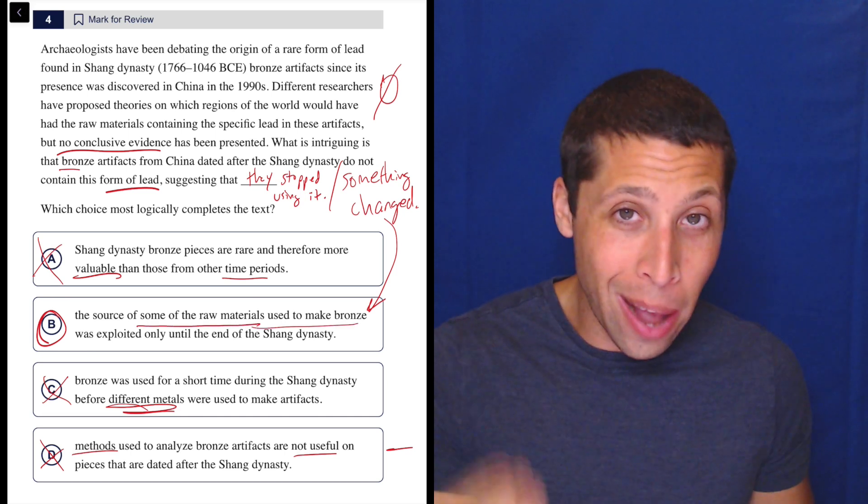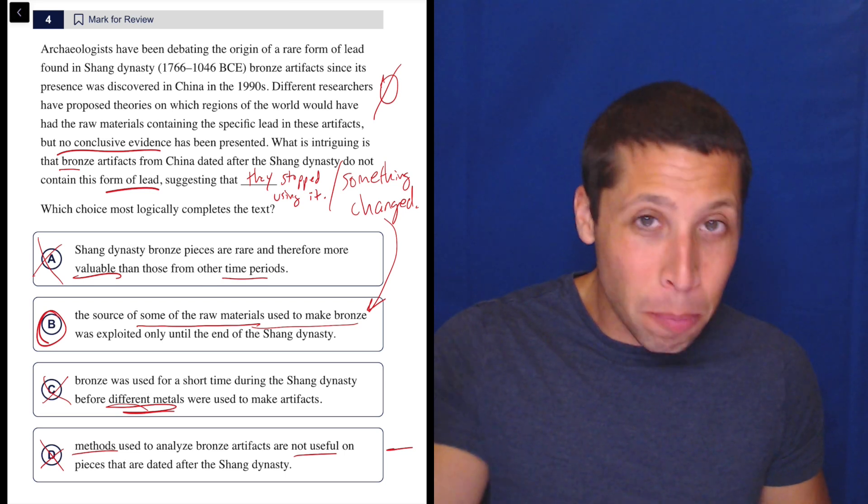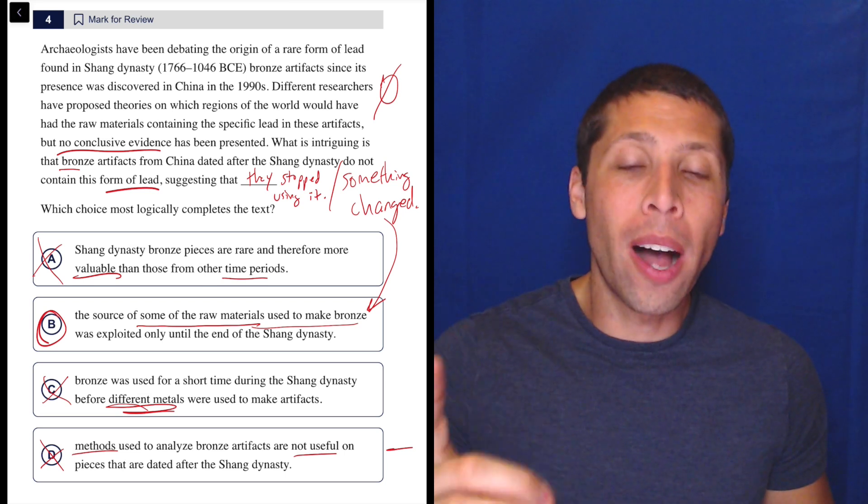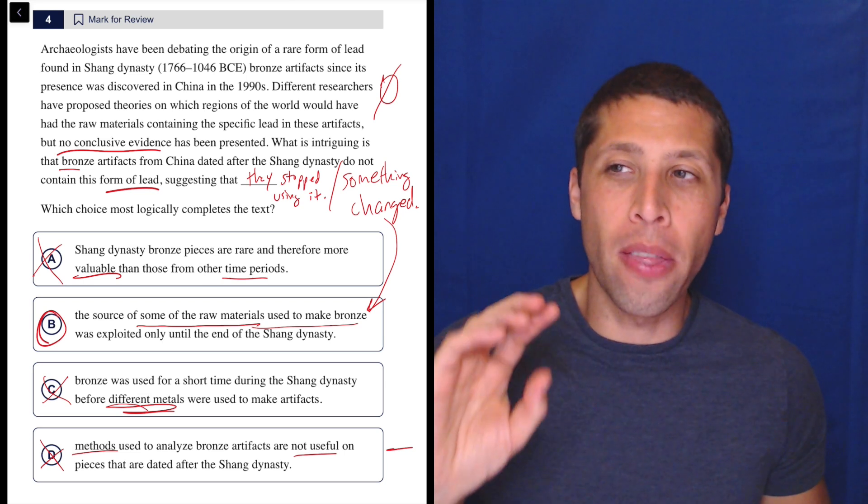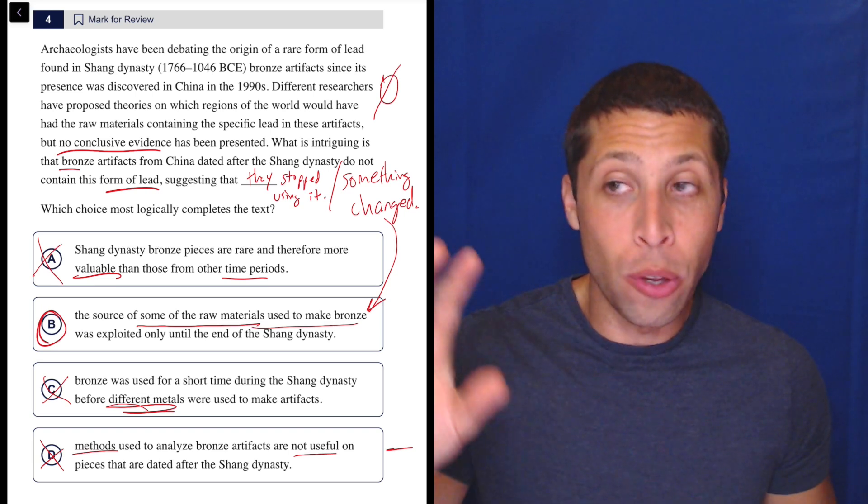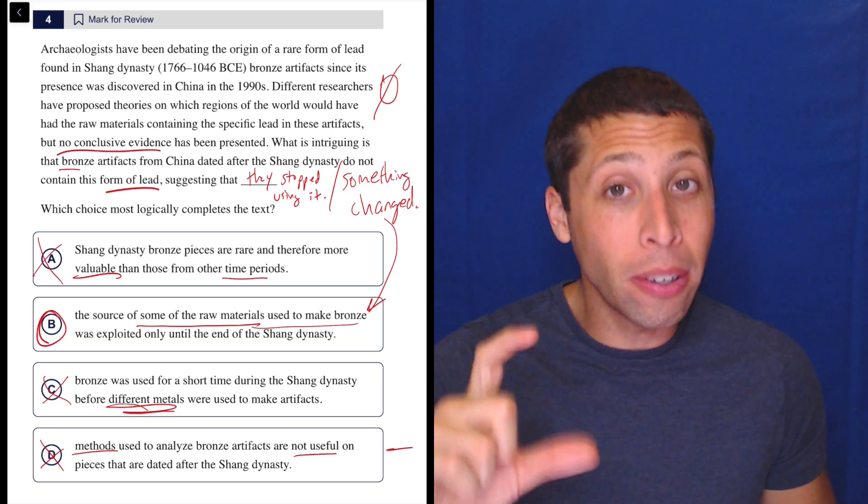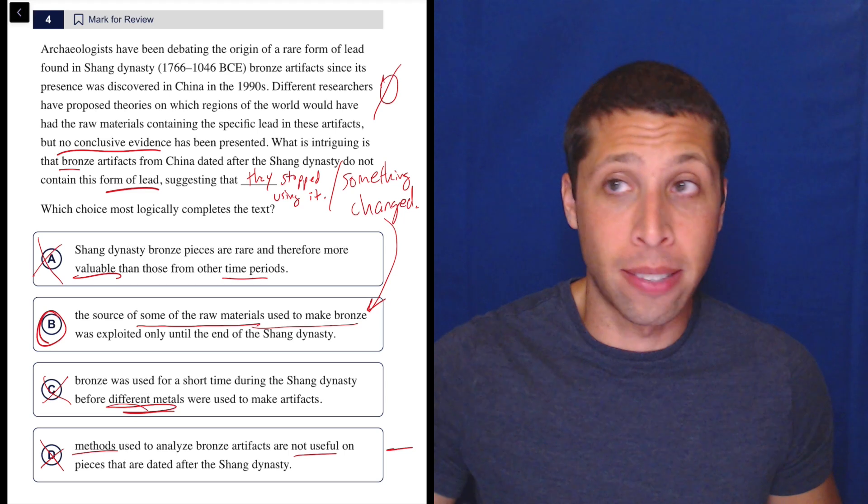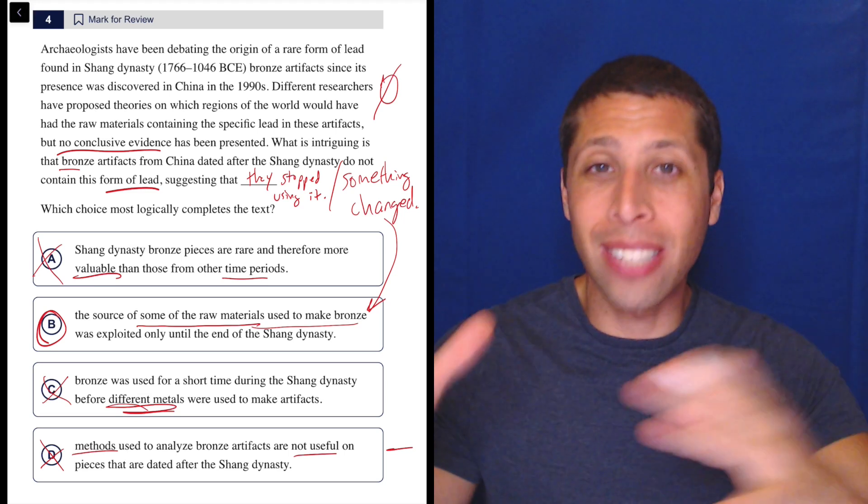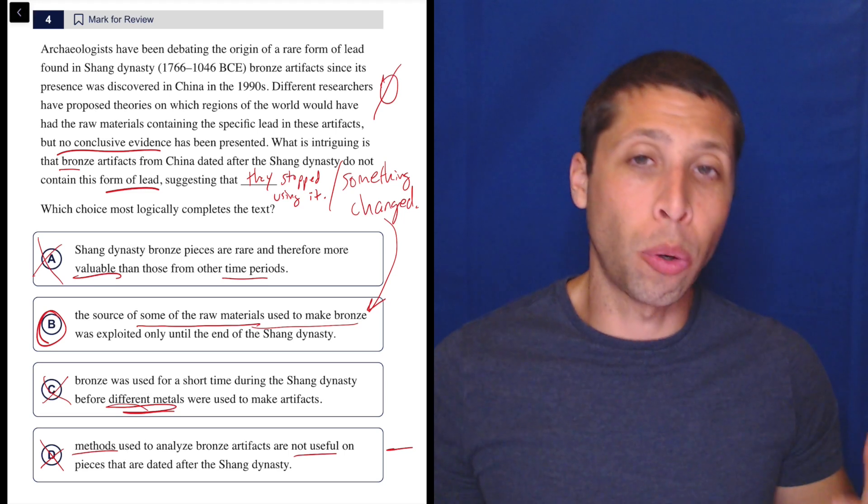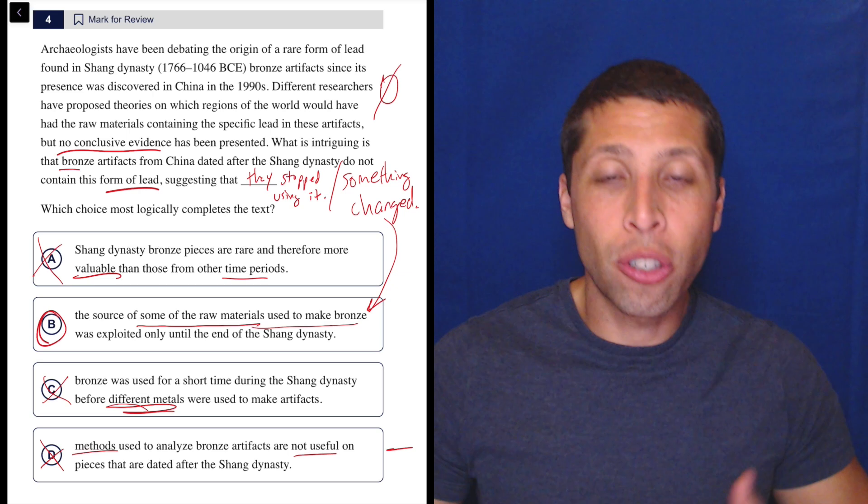Some of the raw materials used to make bronze. That is a very complicated way of saying this particular type of lead. This is why you can't really focus on the nouns in the passage. When you go and look for things in the choices, they very often rename things. They call them by different sets of words so that the answer choice isn't obvious.